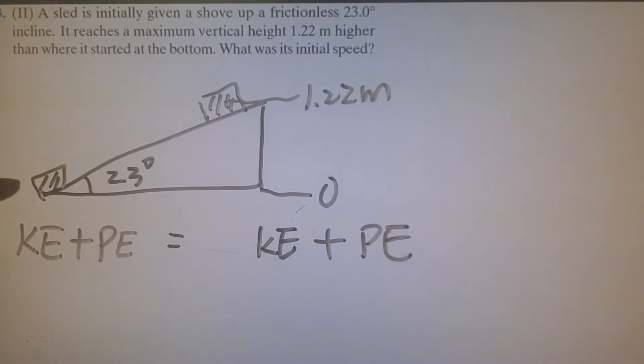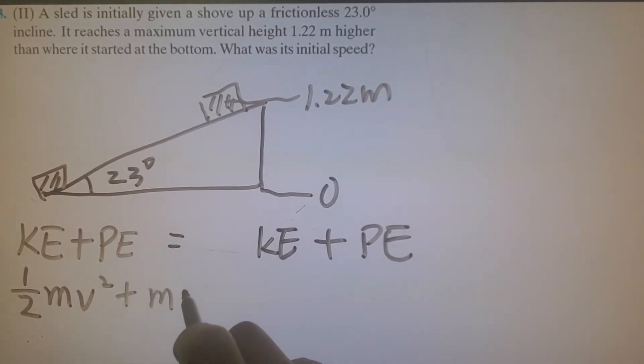What is the kinetic energy? Kinetic energy equals half mv squared. Potential energy is mgh. At the beginning, h is 0.